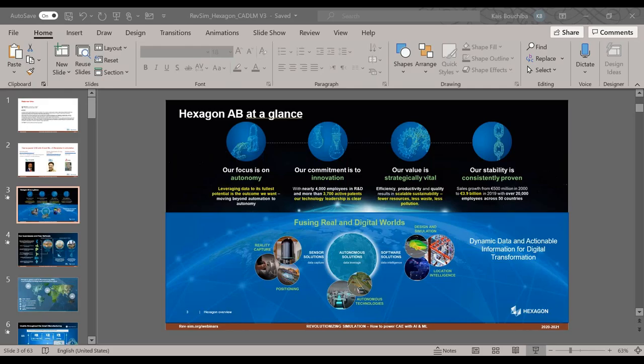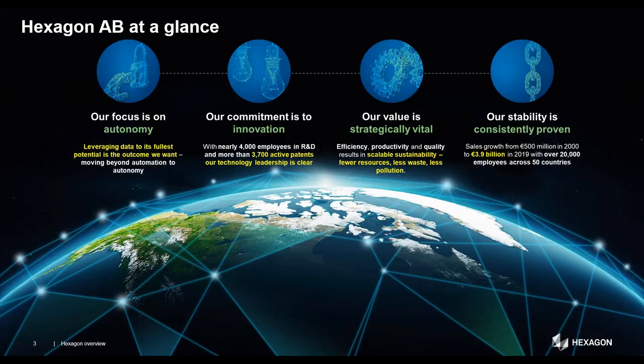I'd like to hand it over to Kais from Hexagon. Thanks, Malcolm. Hi everybody. As Malcolm said, I'm representing Hexagon today. Hexagon, at a glance, is a 3.9 billion euro company with 20,000 employees across 50 countries. Our core values are around focus on autonomy, innovation, being strategically vital, and having a stability which is consistently proven. When you talk about autonomy, it's really about leveraging data to its fullest potential, and that is really what we are aiming for.